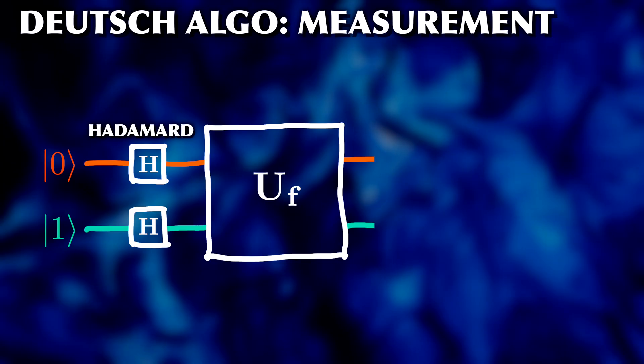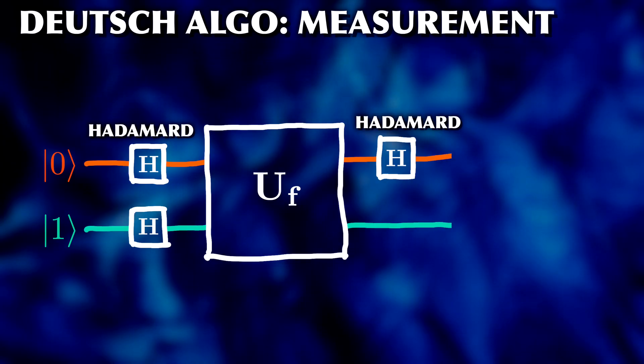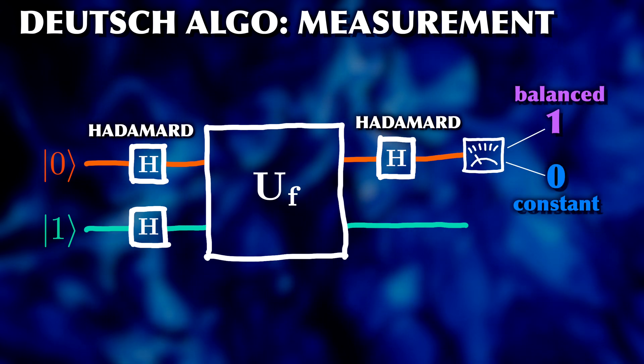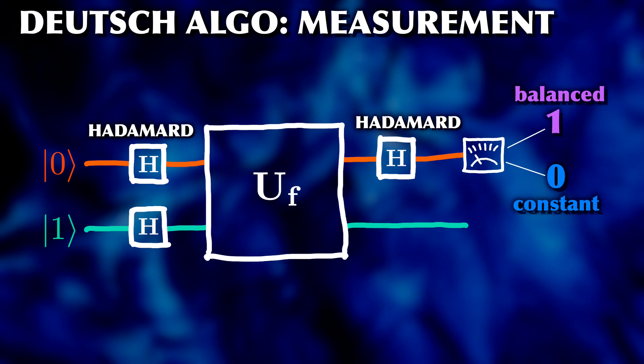And we can directly measure which of those two alternatives applies with just a single measurement. Basically, it's just applying another Hadamard transform to qubit 1 and then measurement of this qubit in the computational basis. But these are just mathematical details.